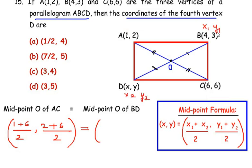So let us substitute here. So it's going to be (4 + x)/2, (3 + y)/2. So this is the midpoint of diagonal BD.